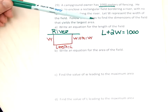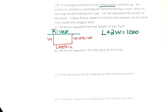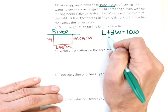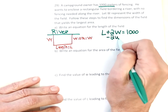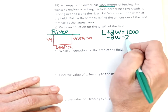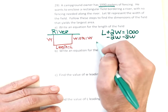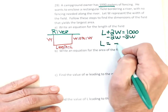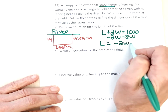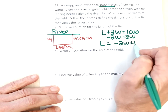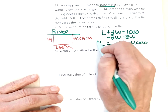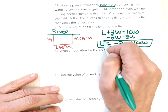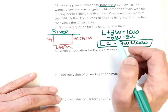The equation to start part A is: one length plus two widths equals one thousand meters of fencing. It says to write an equation for length, which means solving for L. Subtracting two W from both sides gives the answer to part A: L equals negative 2W plus one thousand.